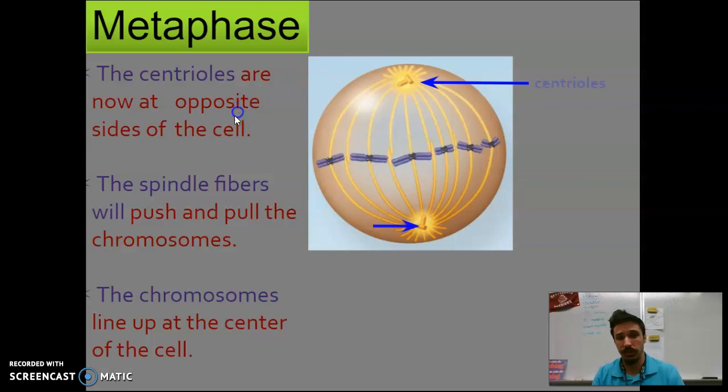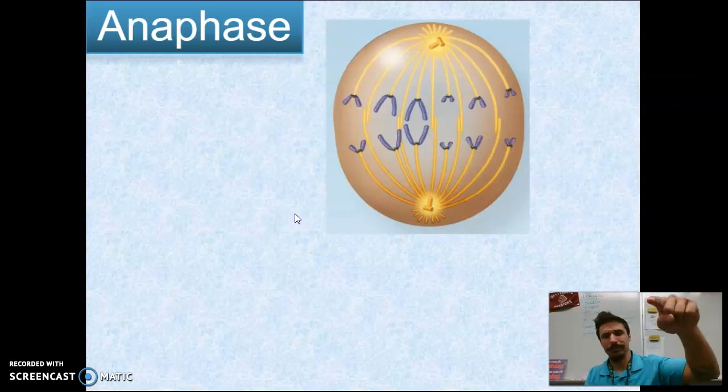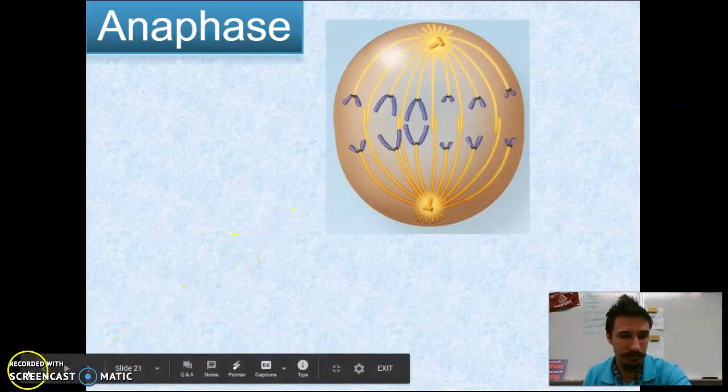So we have our centrioles, and then we have our spindle which is made of microtubules, which are proteins. Don't get confused. And each chromosome is connected to a spindle fiber at its centromere. So if you look, the middle region of every single chromosome, this darker purple region, is where it's attached to a microtubule. All right. We'll talk about anaphase in the next one.